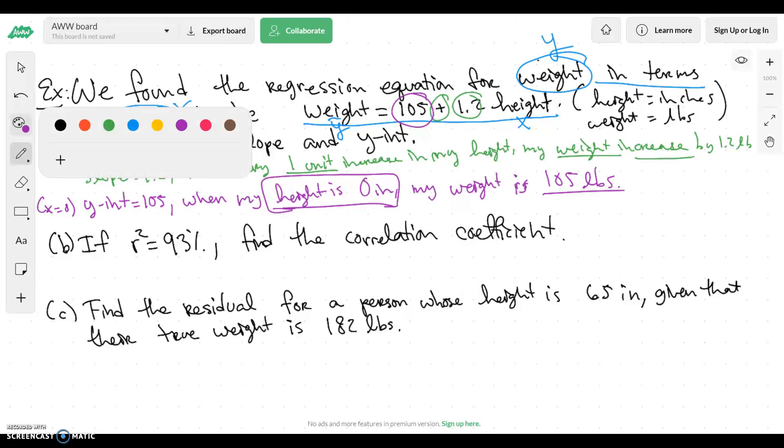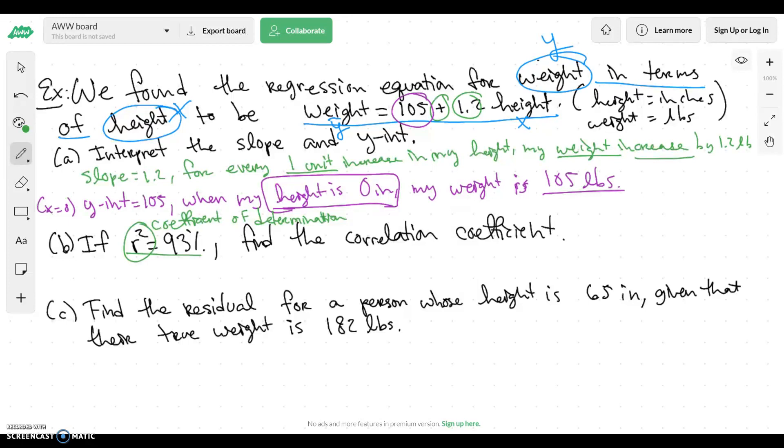Okay, so now let's do part B. So part B says if my r squared, so r squared, remember that this is coefficient of determination. Coefficient of determination, which tells me how much variation I have. It just tells me how much variation there is, how good my model is. 93% is pretty good. So if my r squared is 93%, find the correlation coefficient.